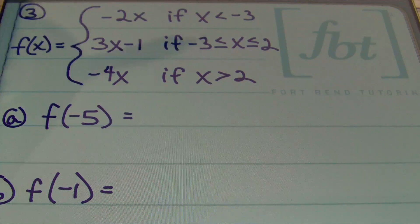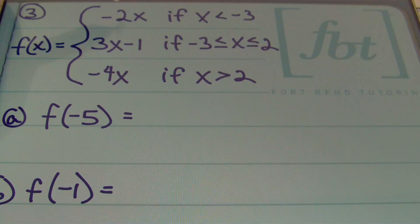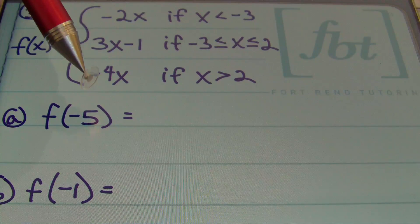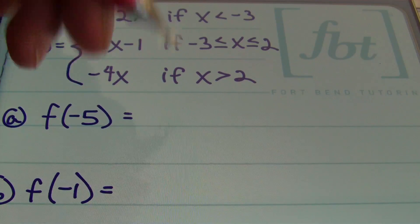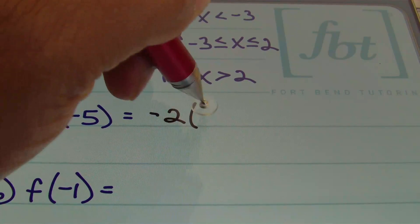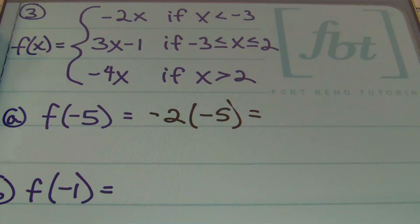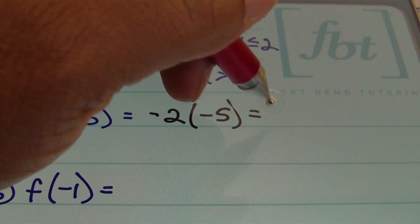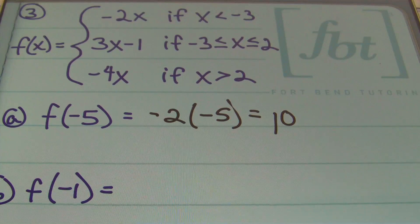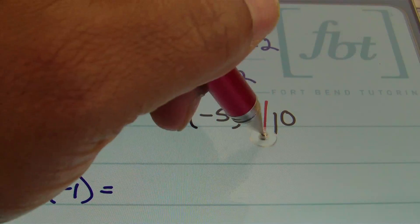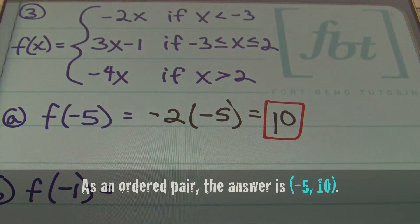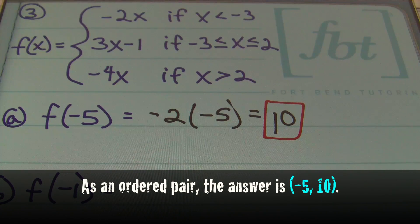For part a, we plug in negative five. Negative five is less than negative three, so we use the first part: negative two x. Replacing x with negative five gives negative two times negative five, which is positive ten.